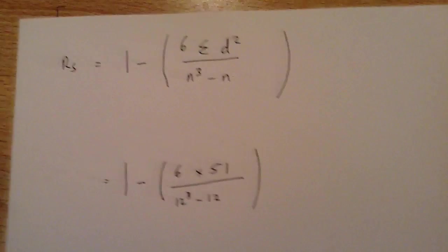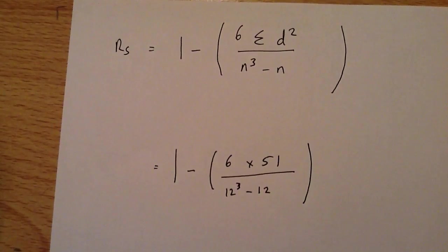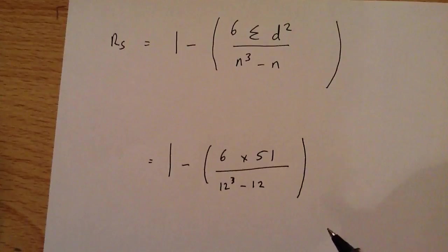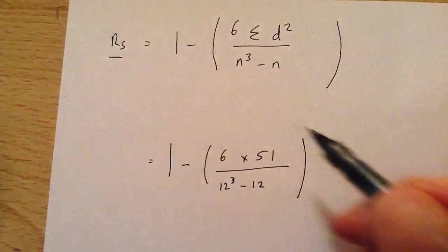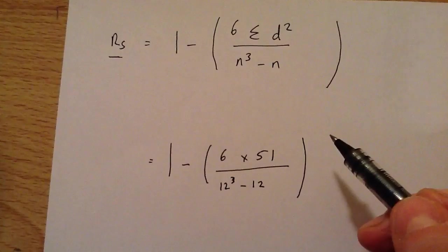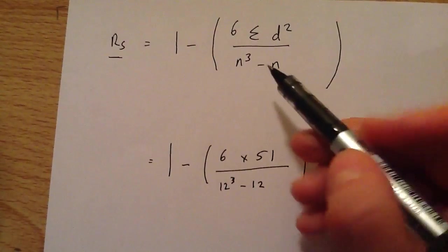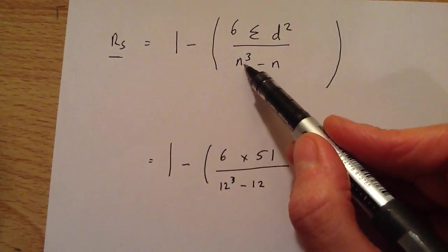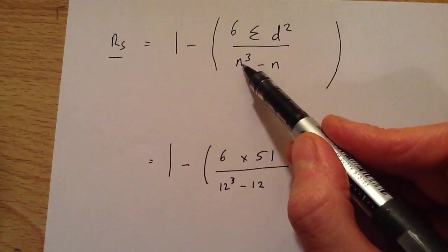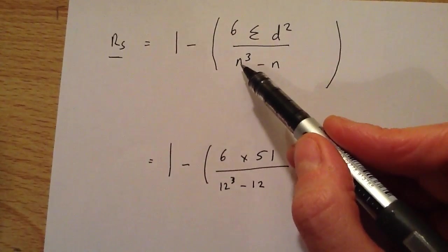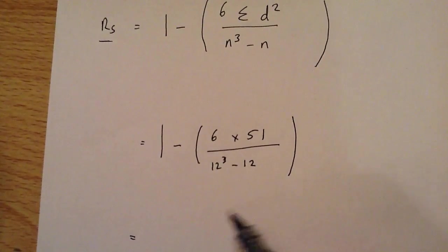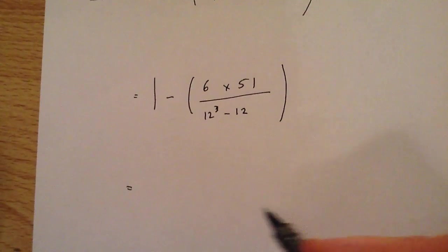51 is an important number because I need to put it into the Spearman's rank formula, which looks like this. It's not as horrific as it might seem — you simply break it down. We have Spearman's rank, or RS. At the top: 6 times the sum of D squared, over N cubed minus N. N is always the number of pairs of data — in our case, 12. We substitute those numbers in and carry on through the calculation.